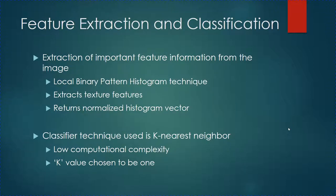The feature extraction step involves extracting important feature information from the image to improve prediction accuracy. There are many different feature extractors such as SIFT, SURF, EBGM, and LBPH — Local Binary Pattern Histogram. In this project I used the Local Binary Pattern Histogram technique to extract texture features from the digit image. LBPH is also computationally less expensive, which is why I chose it. This step returns a normalized histogram vector.